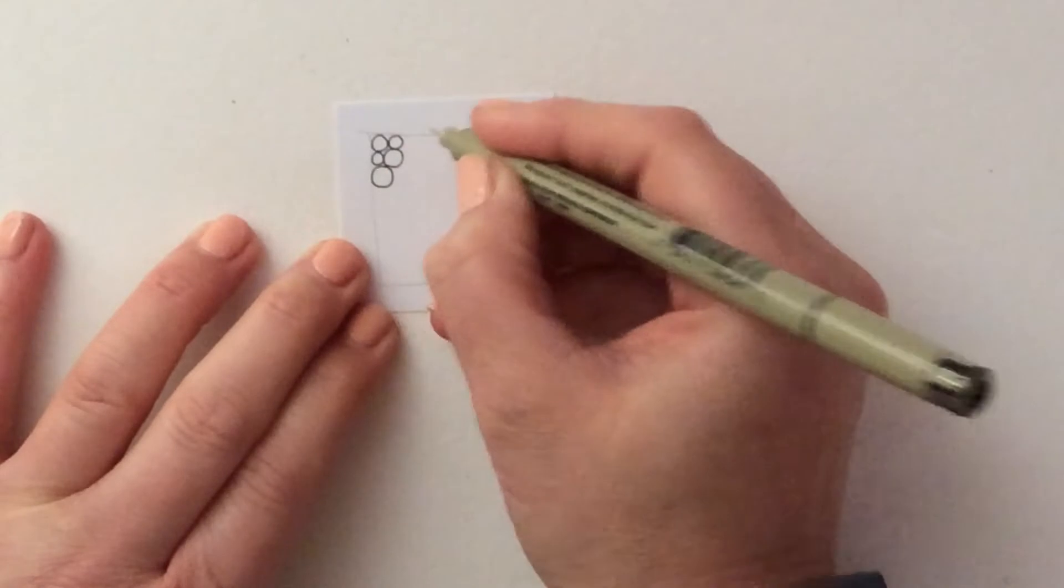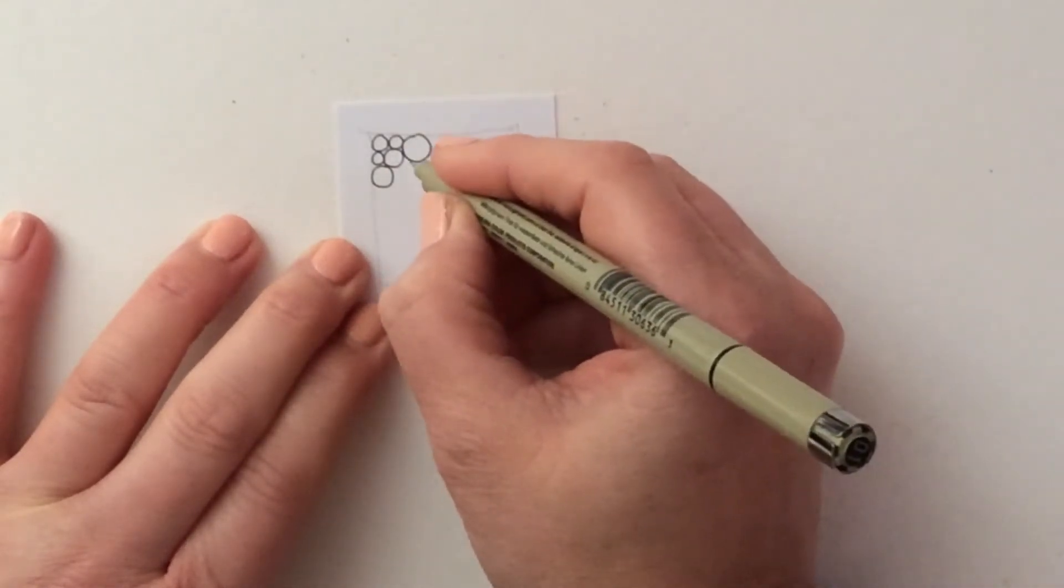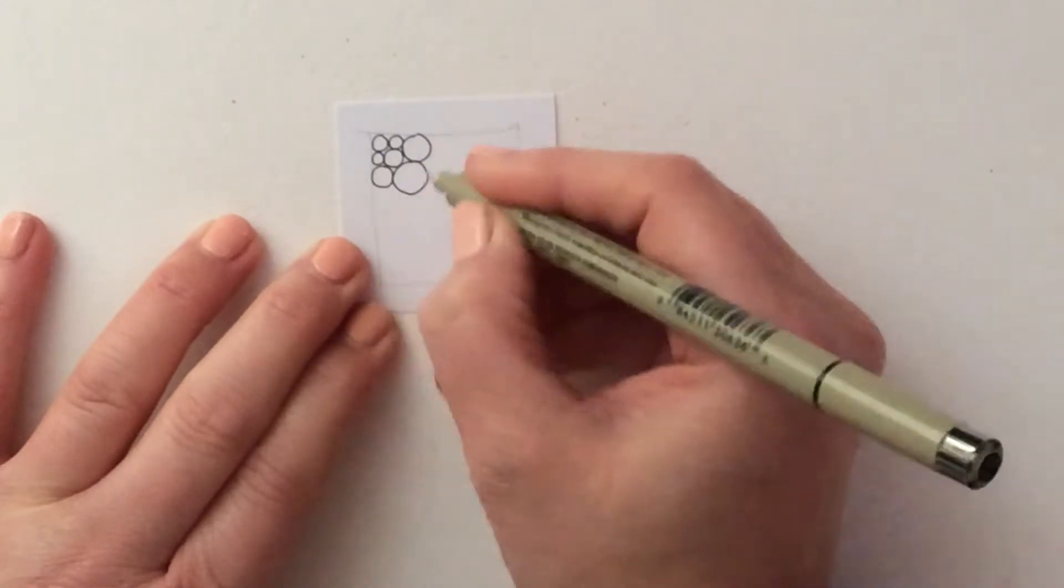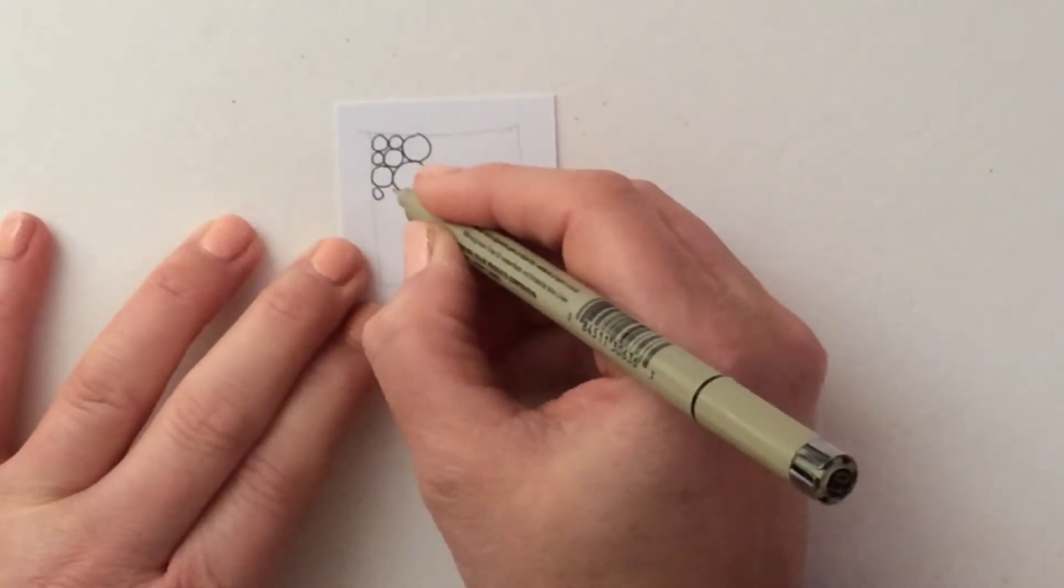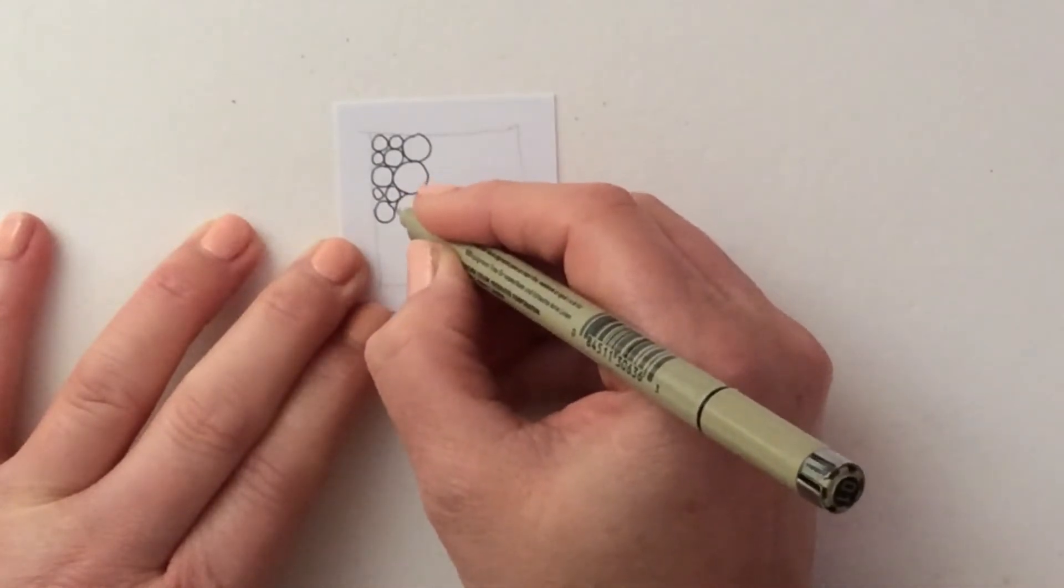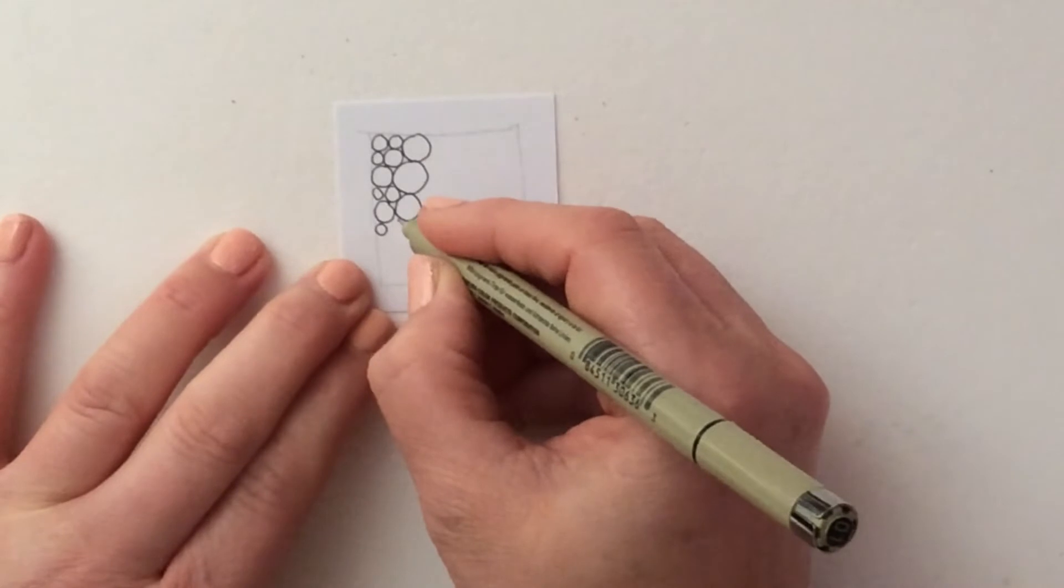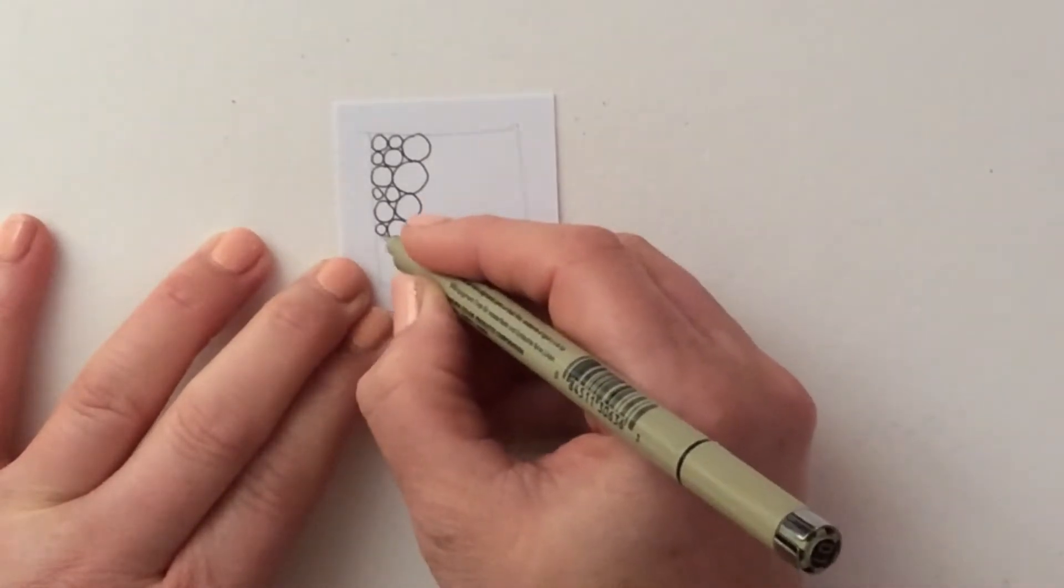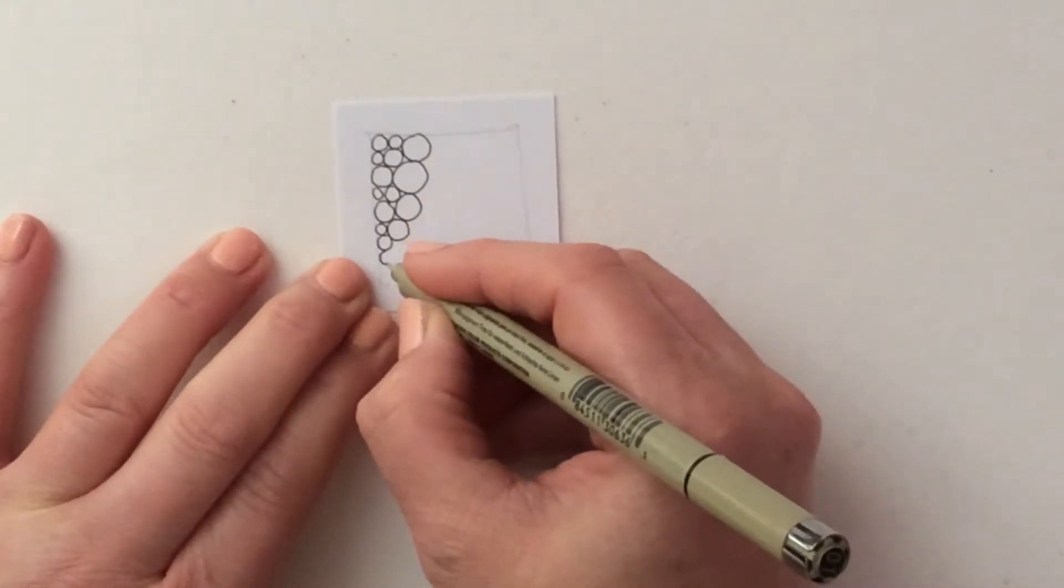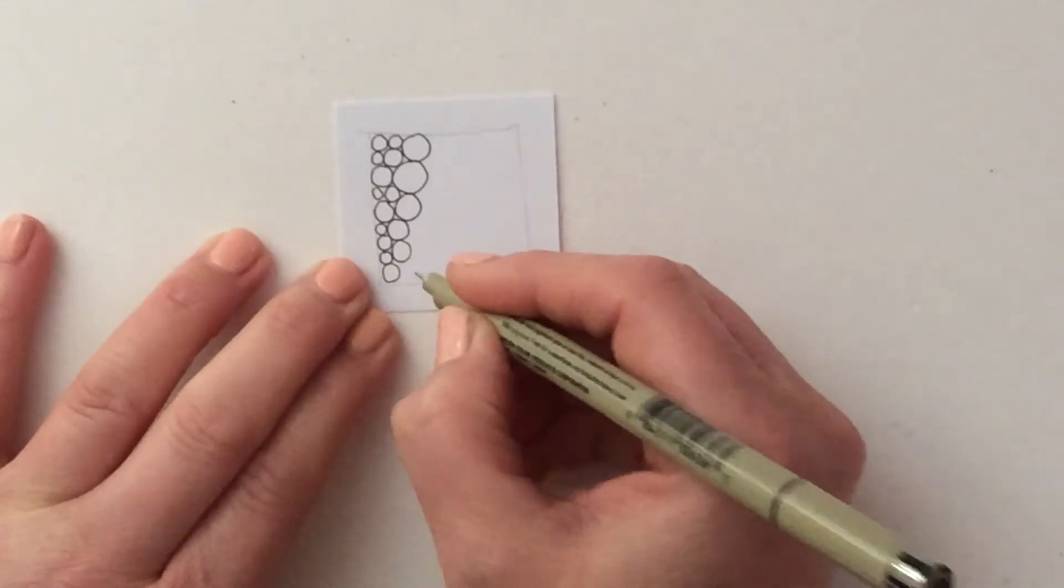They're all different sizes but they're all touching each other and this tangle is very nice and very calming. And you can start to focus on drawing round circles rather than ovals.